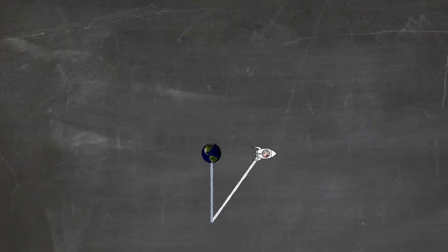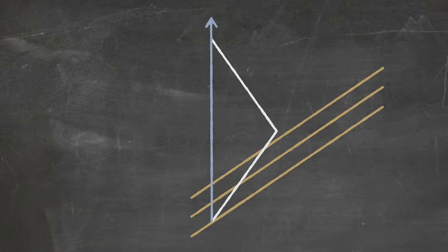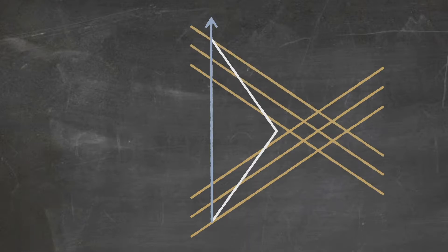Let's think about how the hypersurfaces of simultaneity look for that traveling twin. Let's draw the spaceship moving to the right. On the journey away from the Earth, the traveling twin's hypersurfaces of simultaneity are tilted up and to the right. But on the journey back, the hypersurfaces of simultaneity are tilted up and to the left.